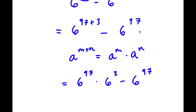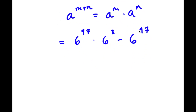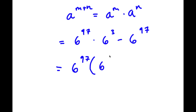From here, if I factor out 6 to the power of 97, I get 6 to the power of 97 times — 6 to the power of 97 times 6 to the power of 3 divided by 6 to the power of 97 — all that's going to be left is 6 to the power of 3. And negative 6 to the power of 97 divided by 6 to the power of 97 is negative 1. So I have 6 to the power of 97 times 6 to the power of 3 minus 1.